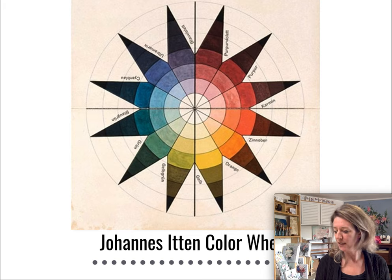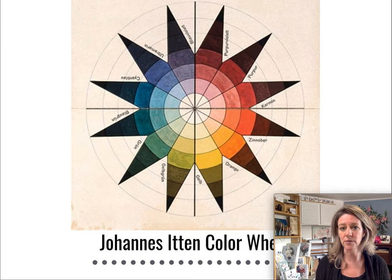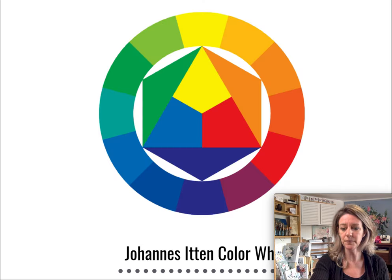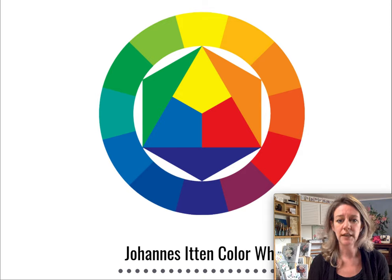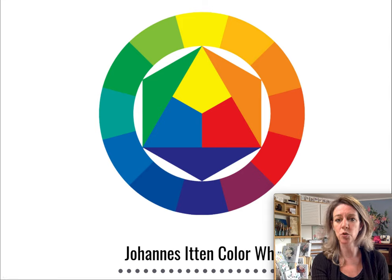In 1919, Johannes Itten invented this color wheel and became a really important art and color theorist from Switzerland, working at the Bauhaus in Germany. This is the color wheel we use today as painters for our subtractive understanding of color. Here you have your primaries in the middle — yellow, blue, and red. The triangles are our secondaries: yellow and blue make green, blue and red make violet, yellow and red make orange. We say violet because of Sir Isaac Newton instead of purple.